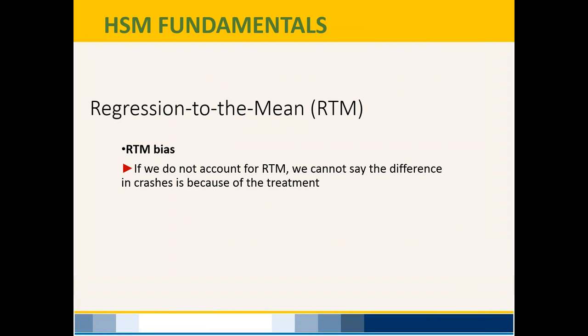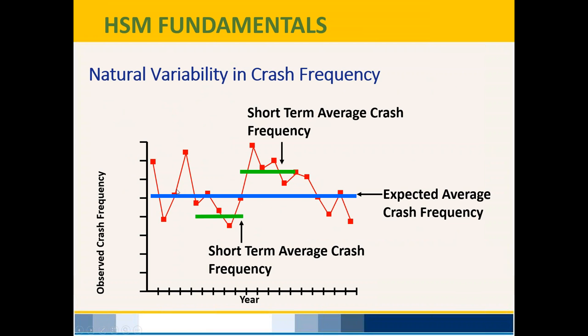Going deeper into the HSM: there's something called regression to the mean. When you look at crash history, you see peaks and valleys. You don't want to fool yourself — you want a true picture of expected average crash frequency. If you only look at a small snapshot in time, you might incorrectly conclude that a peak or valley represents the true average.